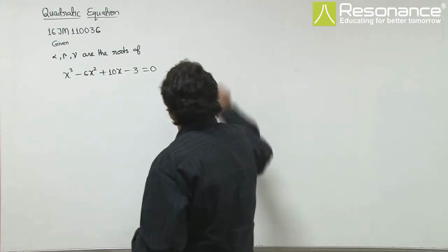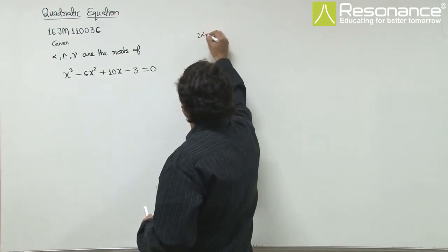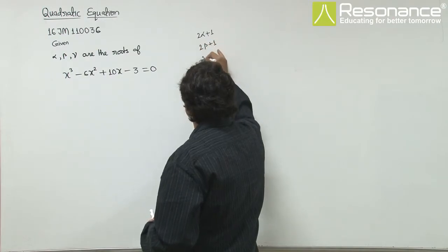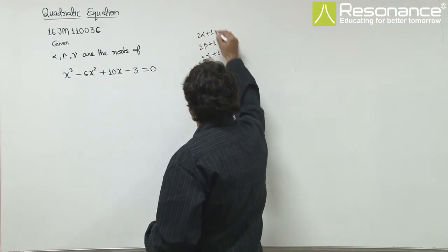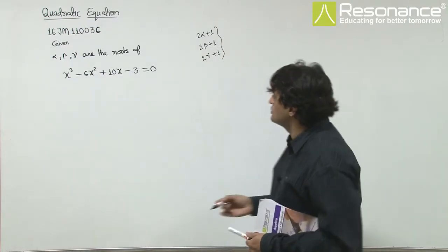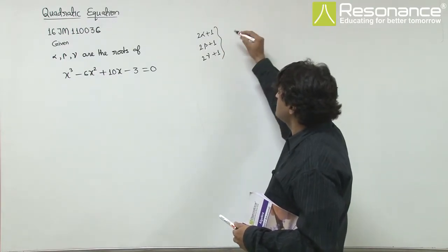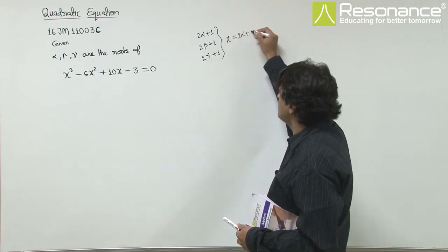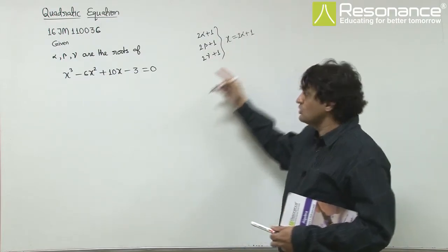And we have to find the equation having root 2α+1, 2β+1, 2γ+1. So we wish that x should be satisfied by 2α+1, 2β+1, and 2γ+1.